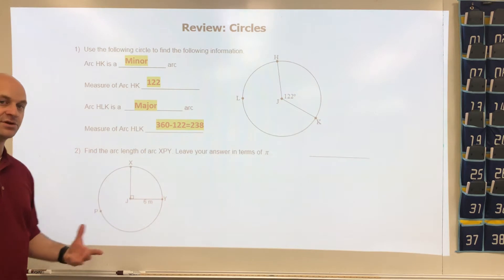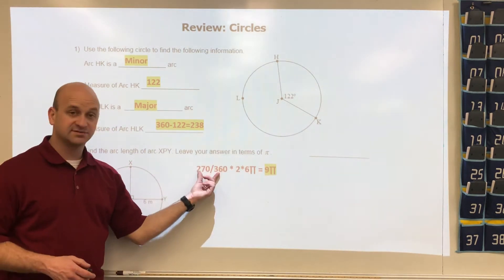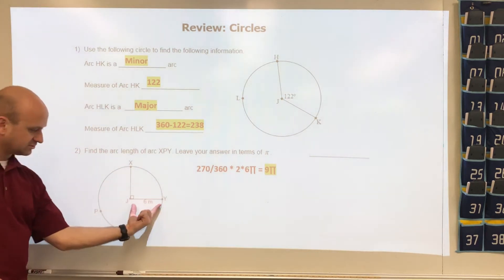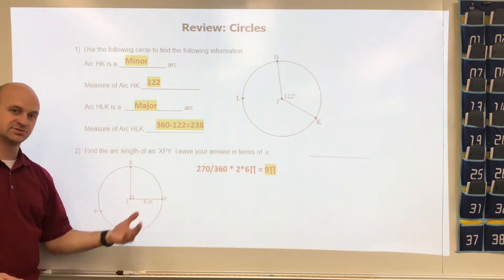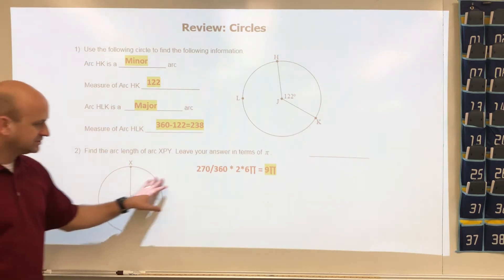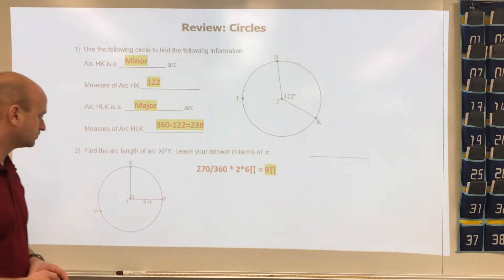What we're going to do is 270 divided by 360 times 2 times 6, the radius of 6. We're going to use 2 times the radius times pi to get our circumference. When you type that whole thing in the calculator, you should get an answer of 9π.